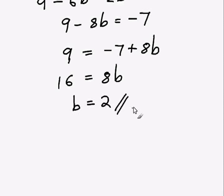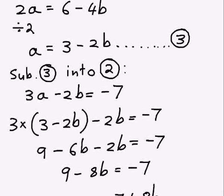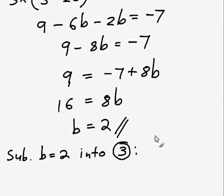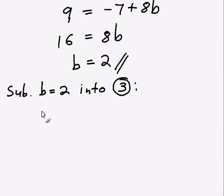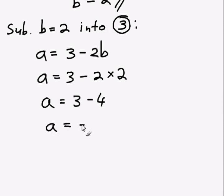So we now know what b equals. It equals 2. We can use this value of b and substitute back into equation 3 to find out what a equals. So substituting b equals 2 into equation 3, so a equals 3 minus 2b. Now instead of b I can write 2, so a equals 3 minus 2 times 2. a equals 3 minus 4. a equals negative 1.